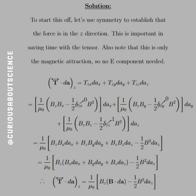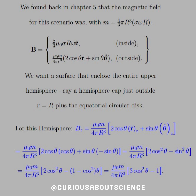We're only looking at what the z-field is doing, since we want the northern and southern hemispheres — by symmetry this makes a lot of sense. Working with the stress tensor is messy, but back in Chapter 5 we found the magnetic moment equals (4/3)pi R-cubed times sigma omega R as the surface current. Inside the shell the field is (2/3) mu-naught sigma R omega z-hat, and outside we use the dipole field mu-naught m over 4pi r-cubed. We want a surface enclosing the upper hemisphere: a hemispherical cap just outside r = R, and the equatorial circular disk cutting it in half.